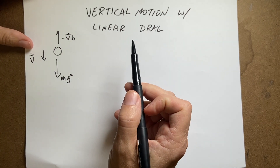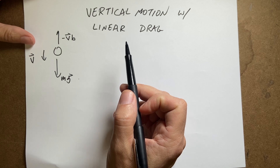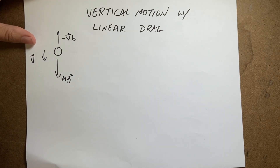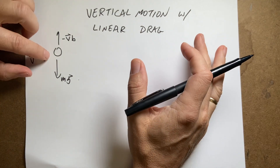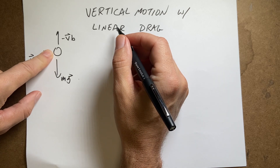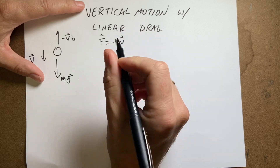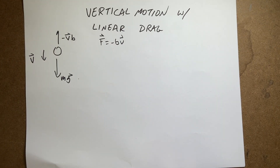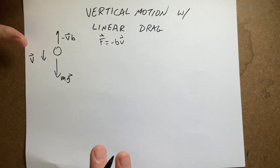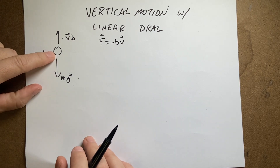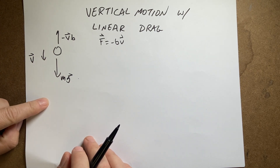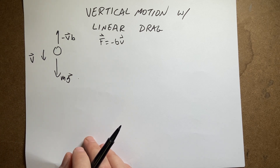I did linear drag in one dimension moving horizontally. So now what would happen if you drop a ball with linear drag? Linear drag says that the force on a ball depends on the velocity. F equals negative BV, where B is some constant, and the faster you go the greater the force. In this case we're dealing with linear drag. So if I have this ball falling, it's in one dimension but now it's vertical.